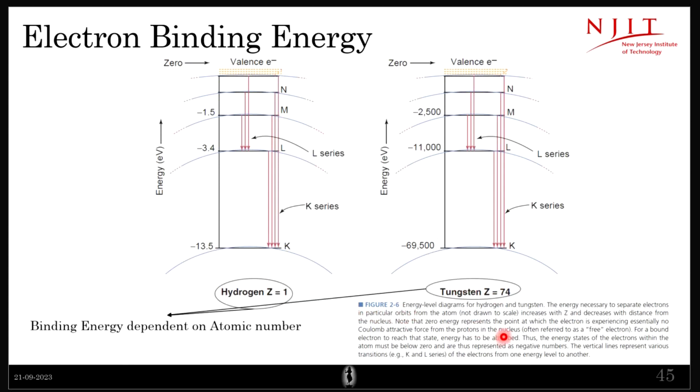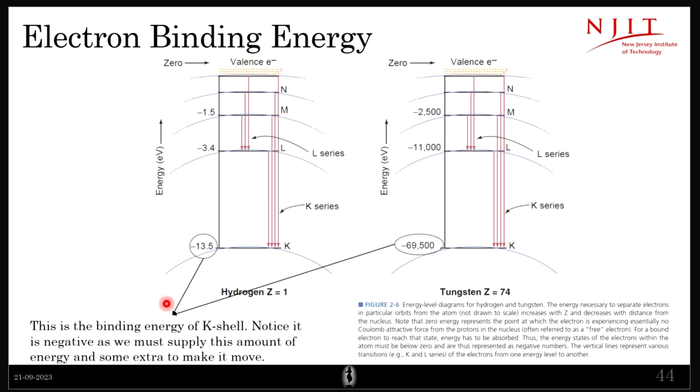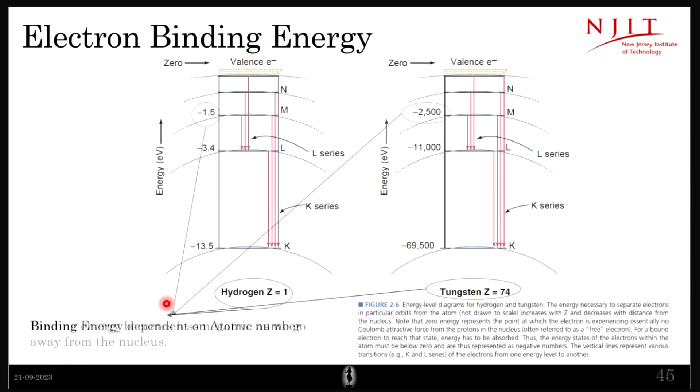Oh yeah, so it depends on the element—that's the atomic number. It's negative, that was the first point. The second point is it becomes less as we go away from the nucleus. Again, that is quite intuitive because the more away you go from the nucleus, the lesser the influence of nucleus over that electron.